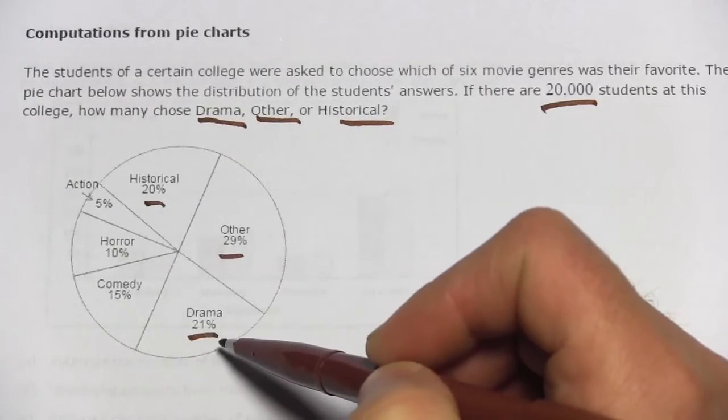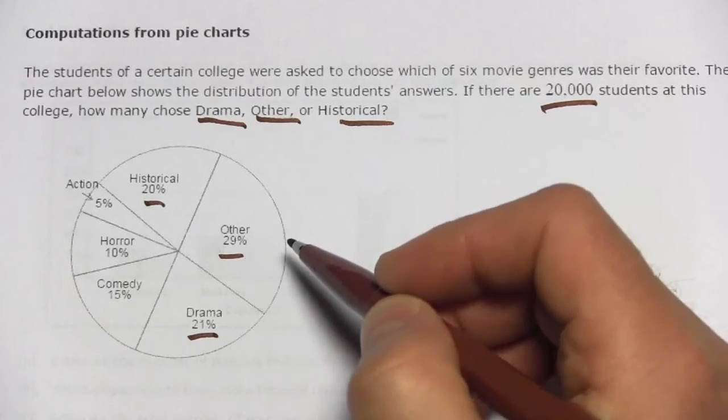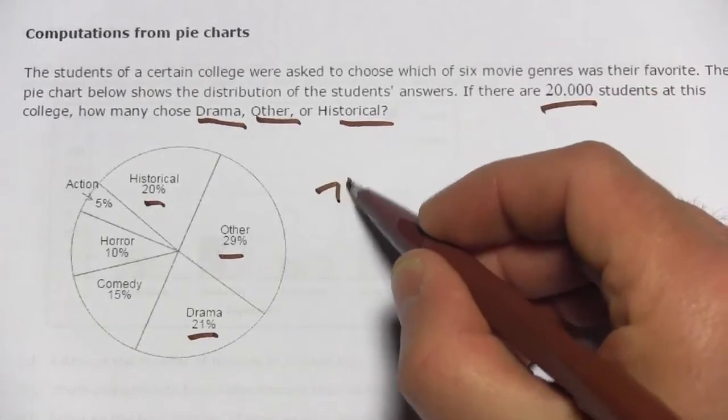Historical is 20, drama is 21, so that's 41, plus 29 is 70. So that's 70%.